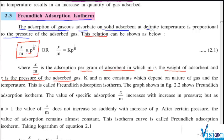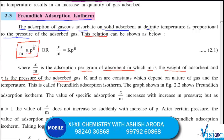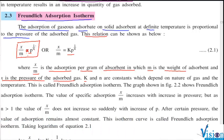If x by m proportionality is removed, then x by m equals k times p raised to 1 by n, where k and n are constants which depend on the nature of gas. For each gas, the constants are different. Capital K and n, they keep on changing, and even with temperature.